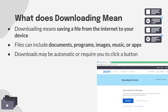So we're talking about downloading — saving a file from the internet to your device. This could be some sort of document, maybe a program like an app on your computer, or it could be images or music. All of these things are what we're talking about when we discuss downloading files from the internet.